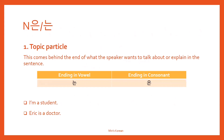So first, 은/는. 은/는 is actually a topic particle. You can use 은/는 after a topic noun. If there is a noun and the noun is the topic of the sentence, you can use 은/는 after the noun. Ending in a vowel, you use 는, and ending in a consonant, 은.